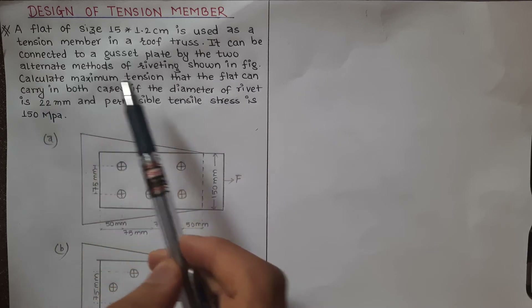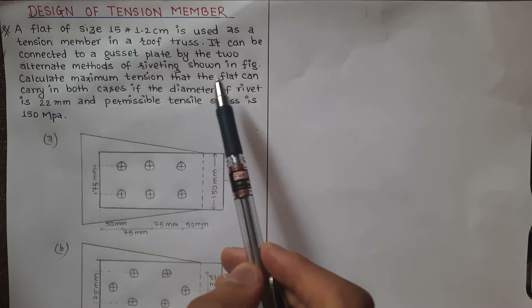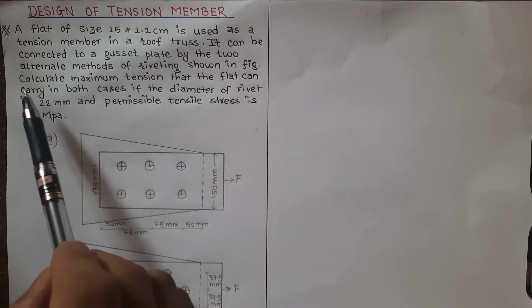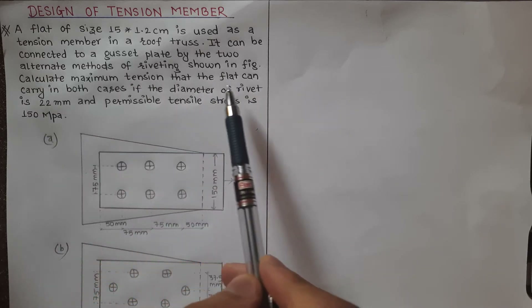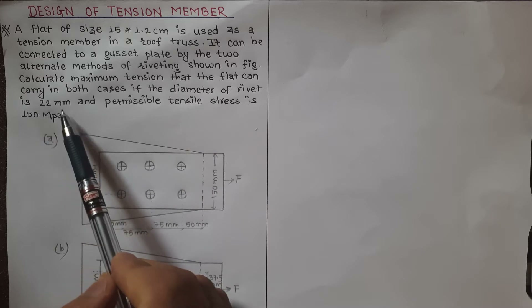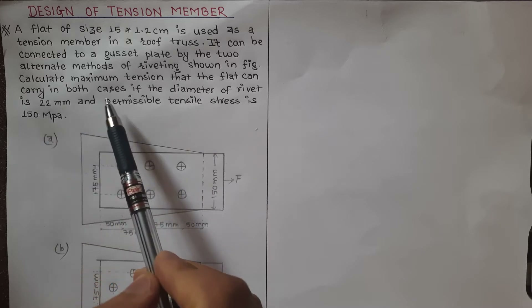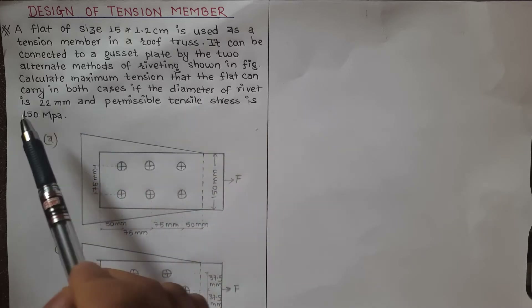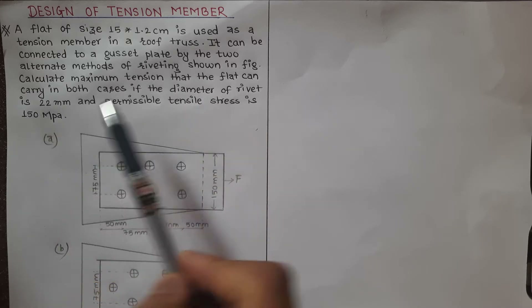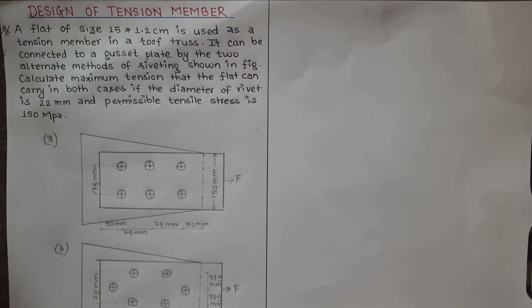Calculate the maximum tension that the flat can carry in both cases, if the diameter of rivet is 22 mm and permissible tensile stress is 150 MPa. We are going to show you the maximum tension for chain riveting and staggered riveting.